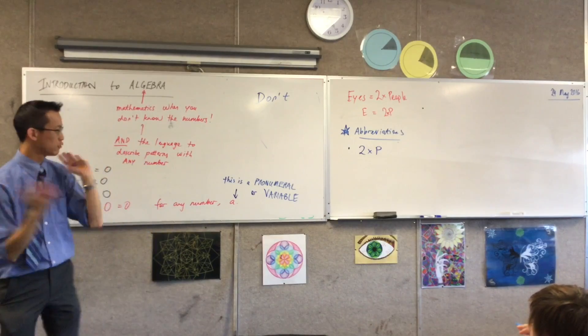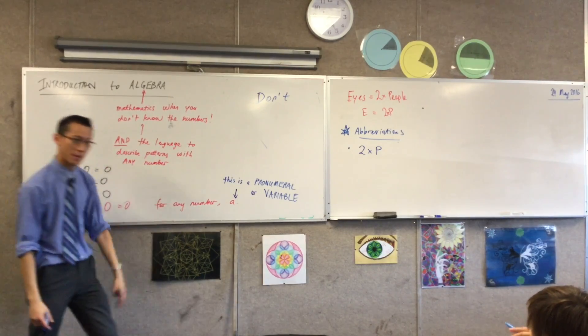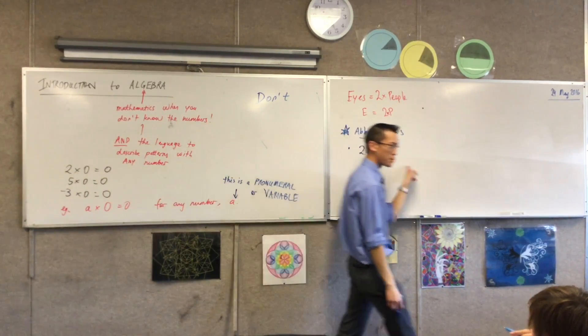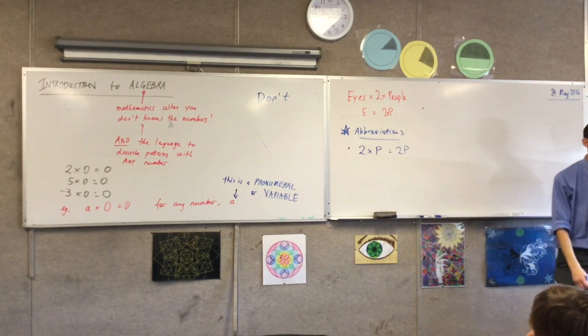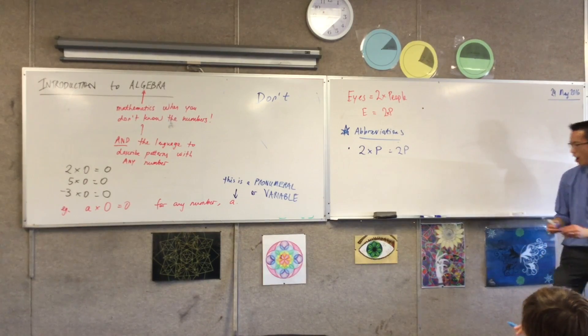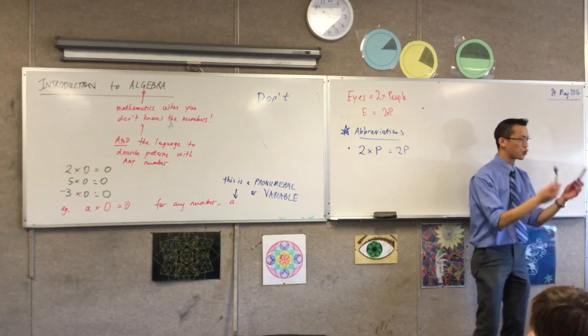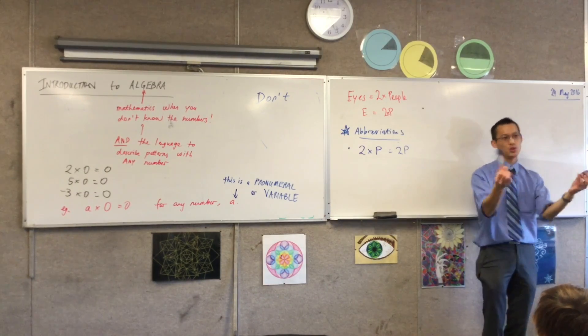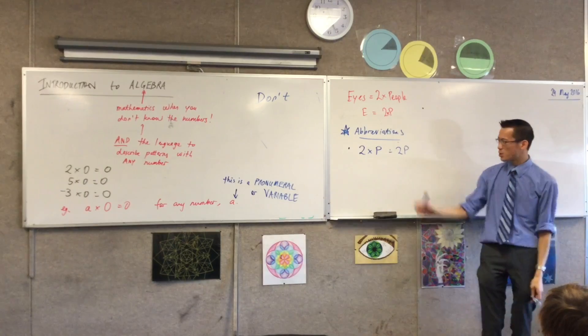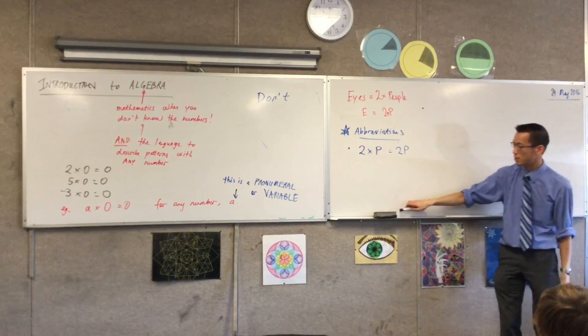If you've got a pronumeral, a little label, a variable, and you're multiplying it by a number, two times p, I'm just going to write that as 2p. It's just like saying, instead of saying I have two of these whiteboard markers, I could just say I have two whiteboard markers. So it's just kind of cutting that out, it's a bit of an abbreviation that's handy for us.